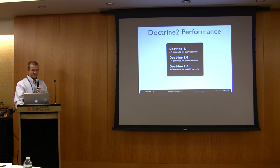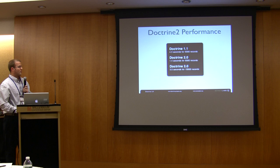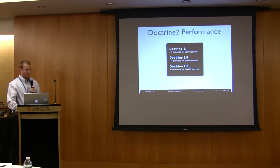So here I'll give you some examples. In Doctrine 1 to hydrate 5,000 records or 1.1, it took about 4.3 seconds. In Doctrine 2, the same result set takes about 1.4 seconds. And for double the amount of records, it's still faster than Doctrine 1.1.